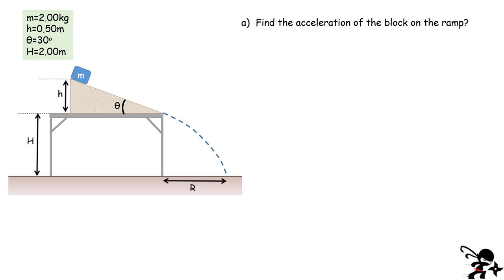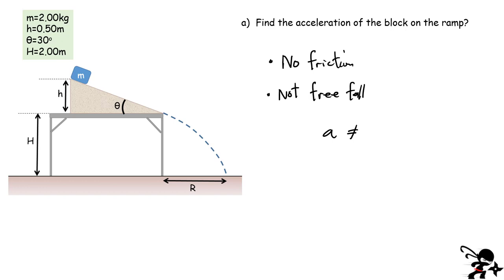First question: find the acceleration of the block on this ramp. A couple of things to remember about this problem — we have no friction, which simplifies our calculation quite a bit. The other thing is this is not freefall. Therefore, the acceleration cannot be written as just minus 9.81 meters per second squared, which is what you'd have for a block simply dropping. So what we're going to do is go to the next page and write this out.